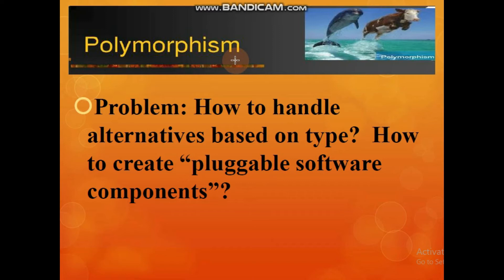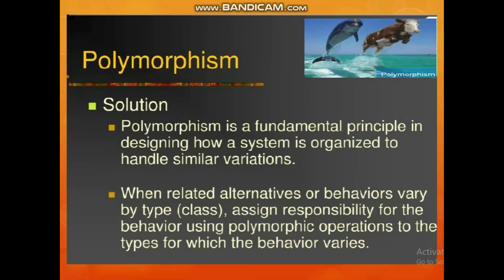Polymorphism is the sixth GRASP pattern we are going to discuss. The problem in this pattern is: how to handle alternatives based on type, and how to create pluggable software components.